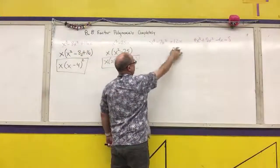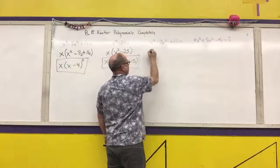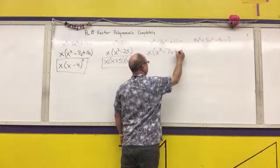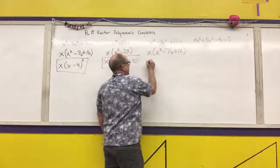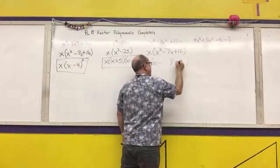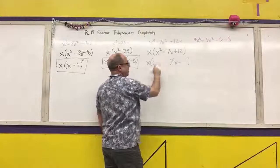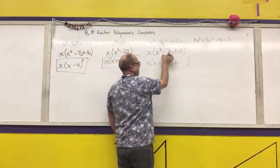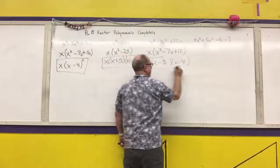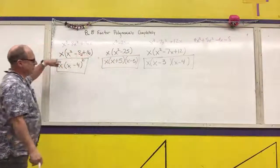The next one is x cubed minus 7x squared plus 12x. Pull out an x, which leaves x squared minus 7x plus 12. I want two numbers that are both negative, multiply to 12, and add to negative 7 — that would be negative 3 and negative 4. So the fully factored form is x times (x minus 3) times (x minus 4).